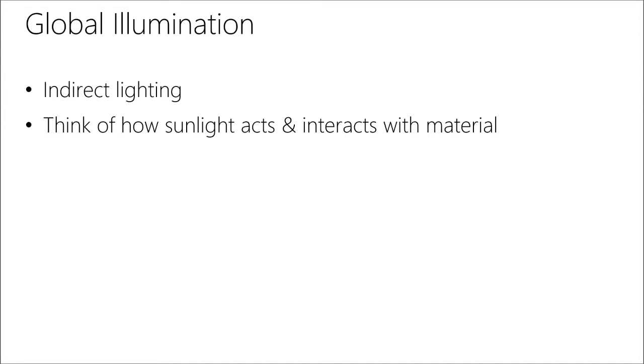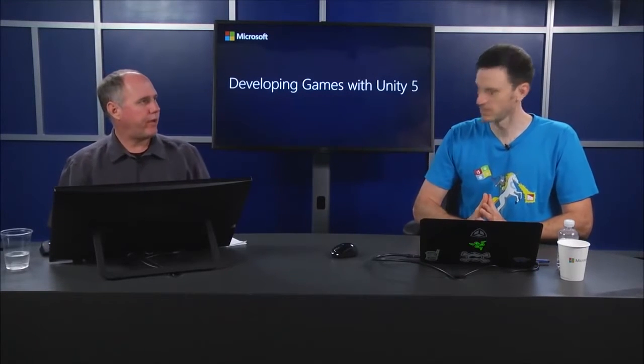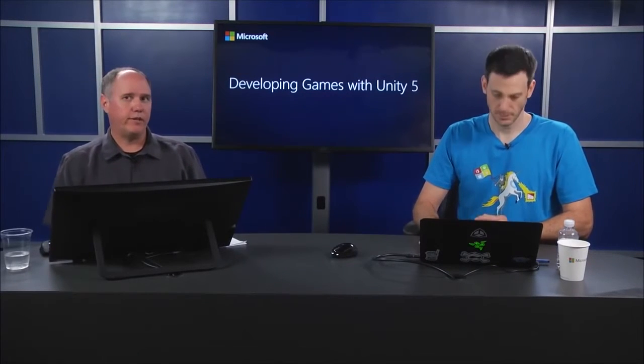With global illumination the idea is you're in a room - red couch, sunlight is interacting with materials in that room - and it's not emitting but affecting everything else around it. It's receiving energy, bouncing that energy back off, and now we're taking advantage of that energy.